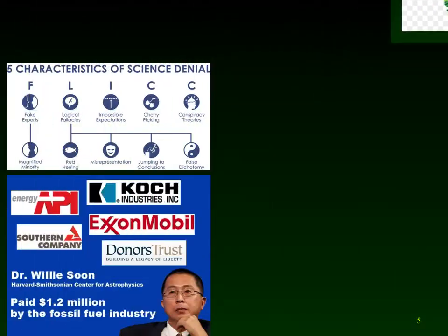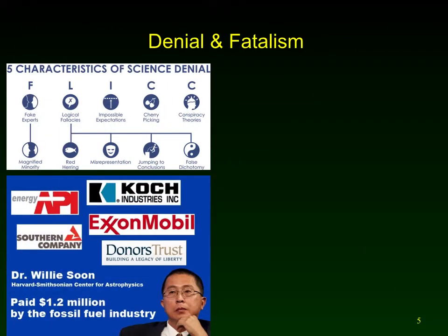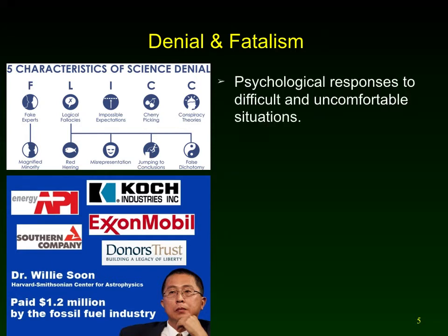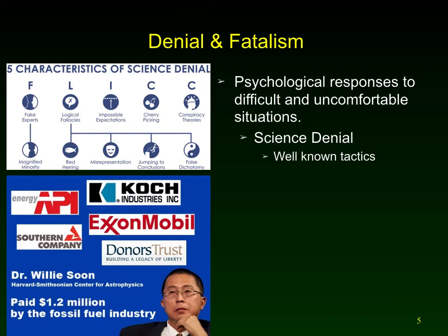One barrier to solving this is uncertainty, denial, and fatalism. Denial and fatalism are natural psychological responses to difficult or uncomfortable situations. Denial is natural — the first reaction is to say it's not true and keep doing what you're doing. But most people move on and say there is a problem, how can I address it? In the case of science denial, however, this is a deliberate tactic stoked by certain groups to prevent change.